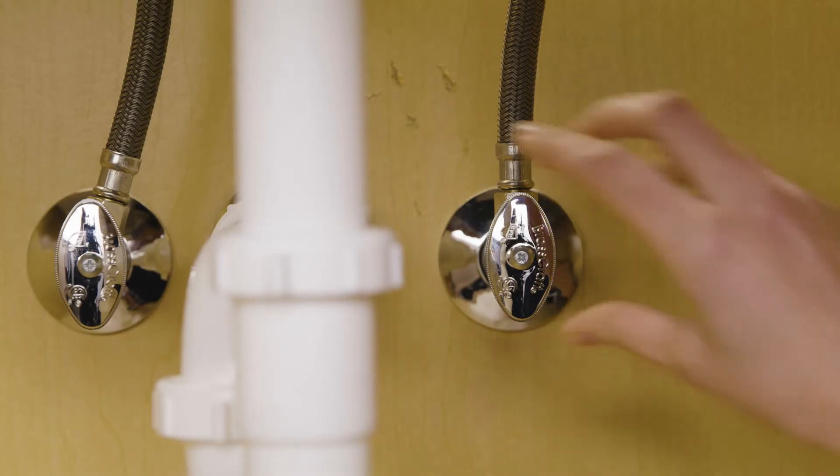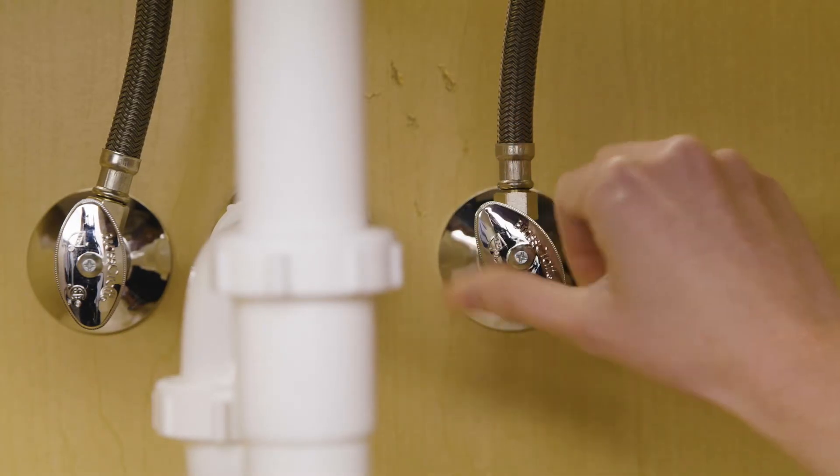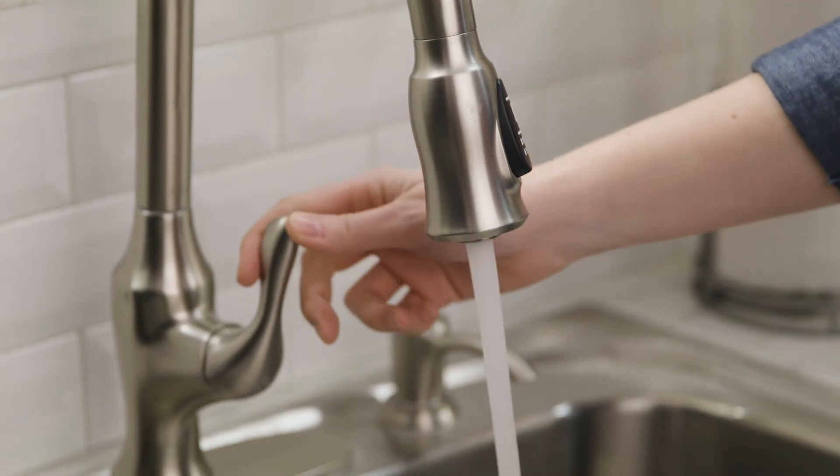First you'll need to install the brass tee fitting. Turn off the cold water supply to the sink. Then turn on the cold water knob to your kitchen faucet to release pressure.